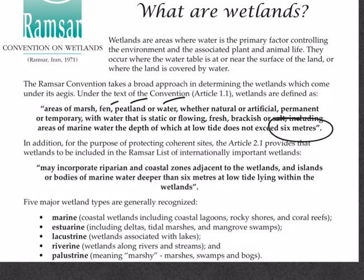Two key points to note: wetlands may be natural or artificial (i.e., manmade), and the depth at low tide should not exceed six meters. Additionally, the Ramsar convention, for the sake of protecting coherent sites, also defines riparian and coastal zones adjacent to the wetlands, and islands or bodies of marine water deeper than six meters at low tide lying within the wetlands, as wetlands.